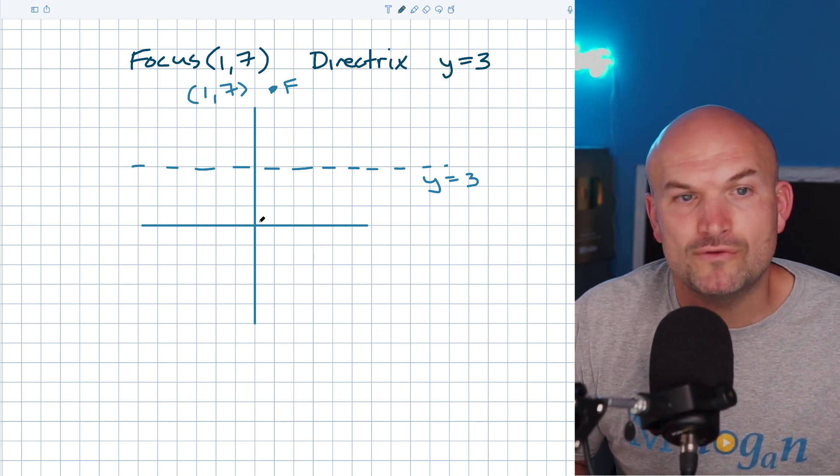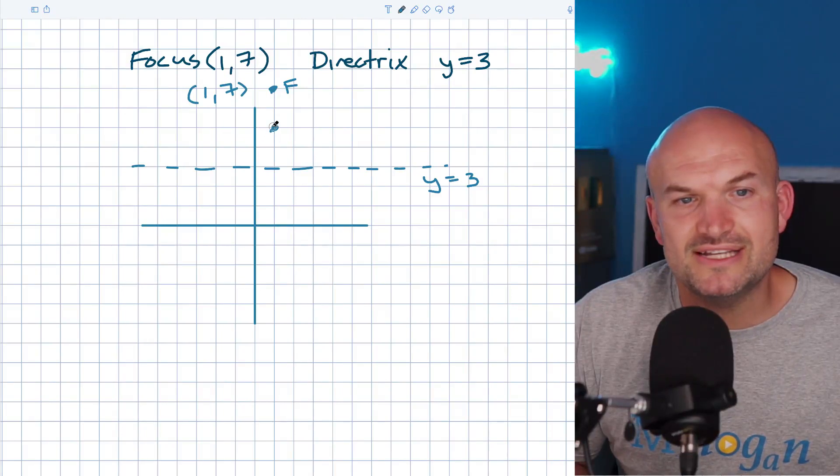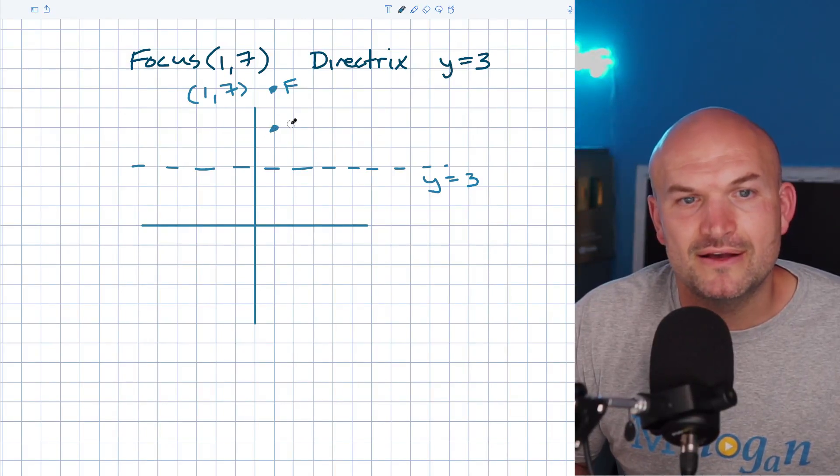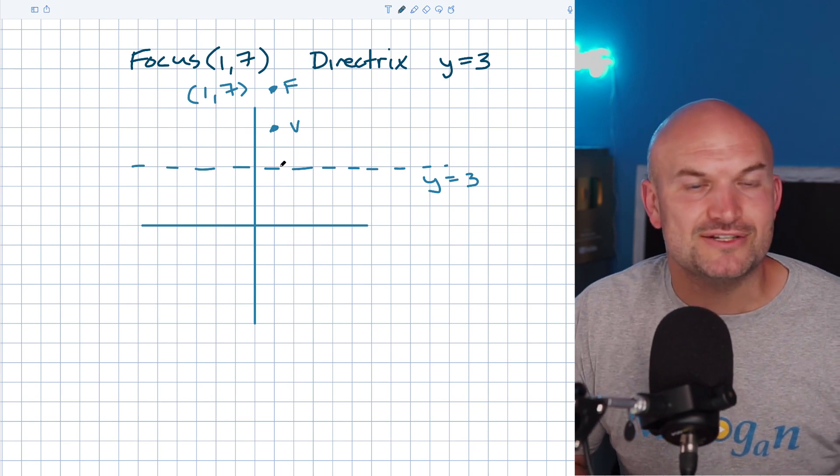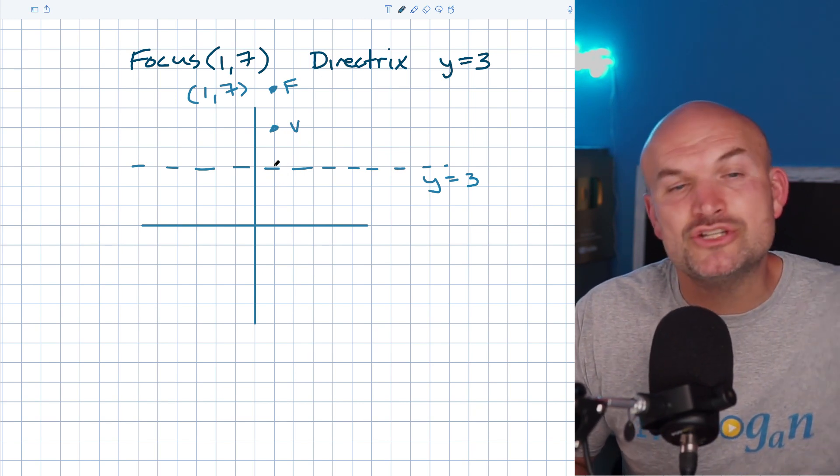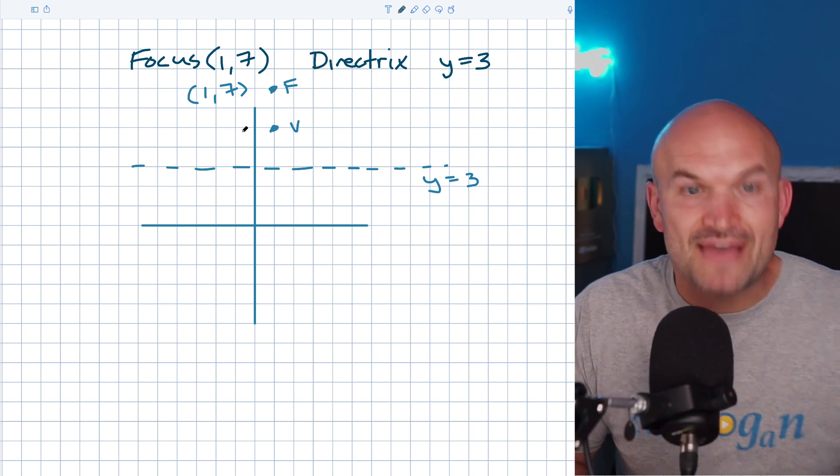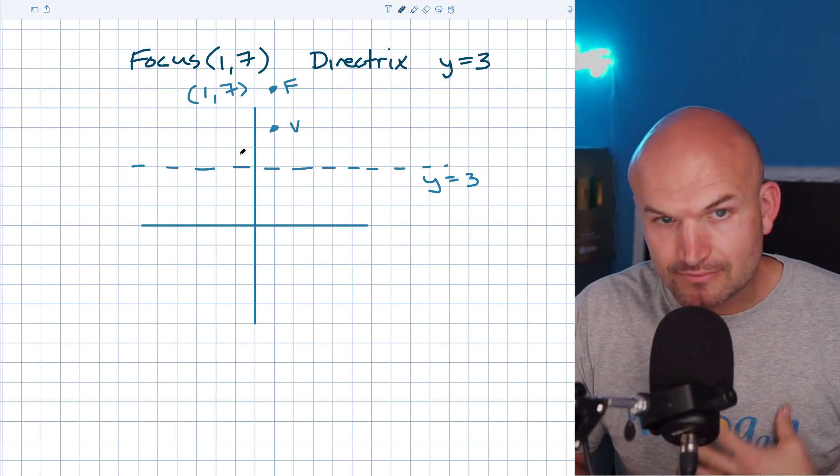That's ten divided by two, which is five. Go over one and up five, and you can see that makes sense because there's two units up to the focus and two units down to the directrix.